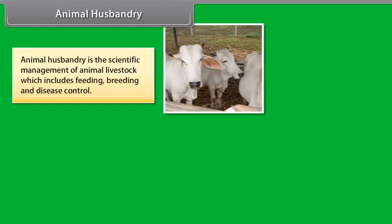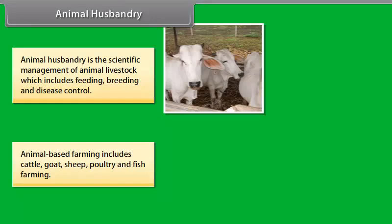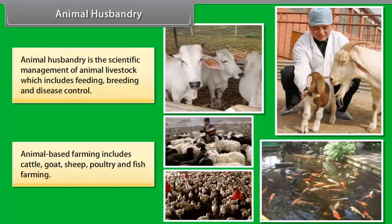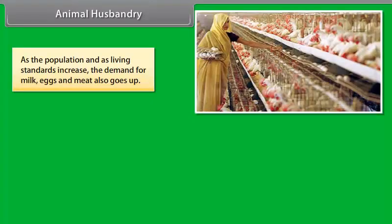Animal Husbandry is the scientific management of animal livestock which includes feeding, breeding and disease control. Animal-based farming includes cattle, goat, sheep, poultry and fish farming. As the population and living standards increase, the demand for milk, eggs and meat also goes up. In addition, the growing awareness of the need for humane treatment of livestock has brought new limitations in improved livestock farming.